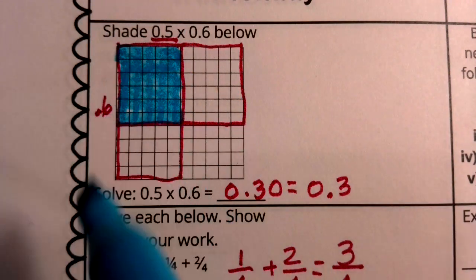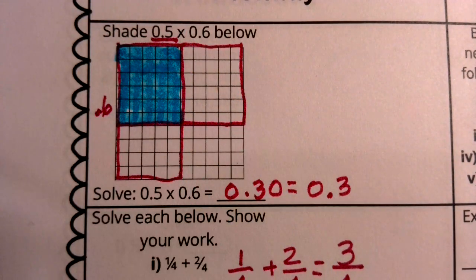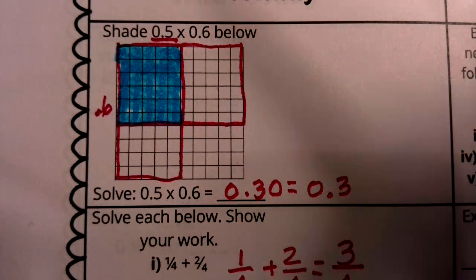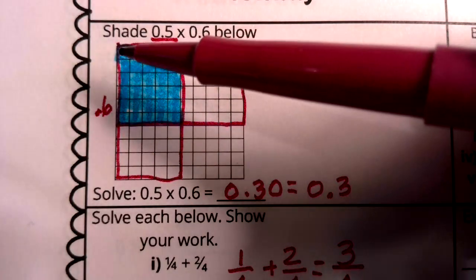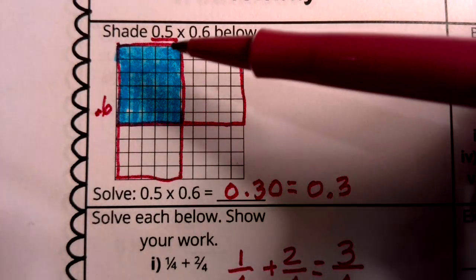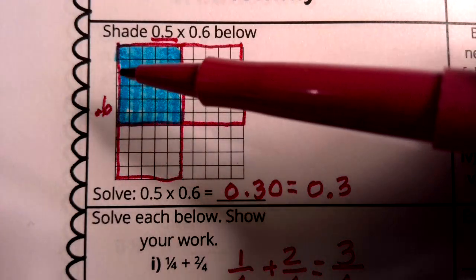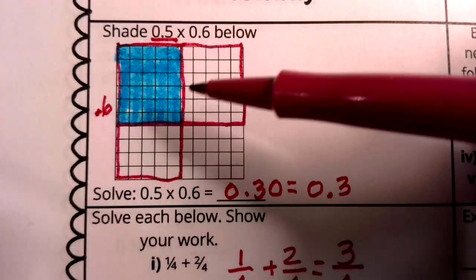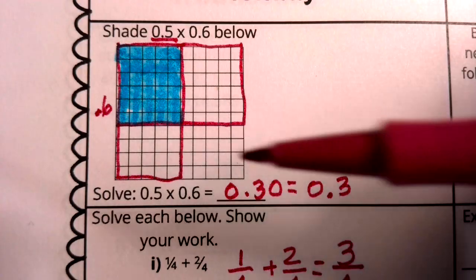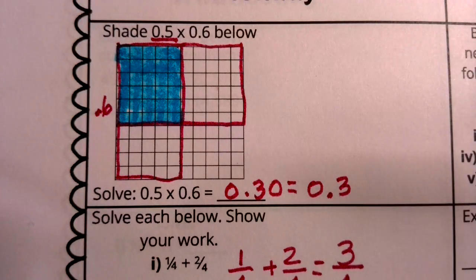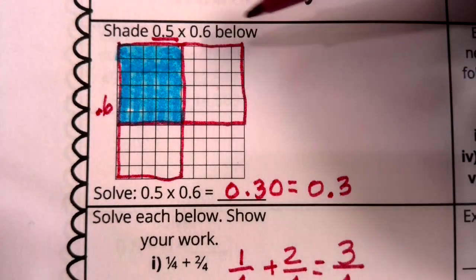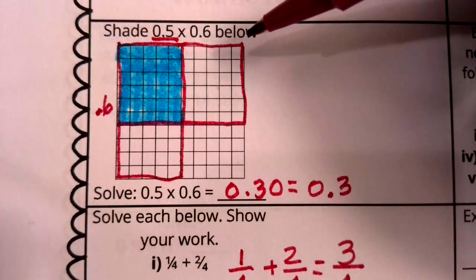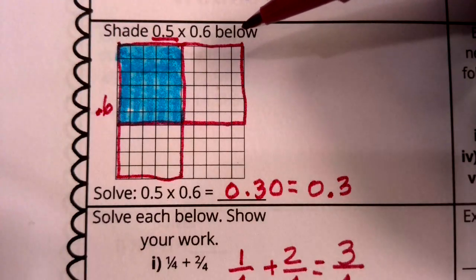This is the moment that we see our product in multiplying decimals because it's the overlap between, in this case, my vertical five tenths and my horizontal six tenths. Sometimes you'll actually see it modeled and you'll have to determine what the factors are that were multiplied together. But I could do that by looking one way. In this case, looking vertically and saying how many of these columns have shading? Well, five have shading.